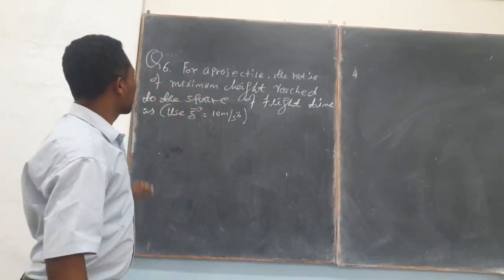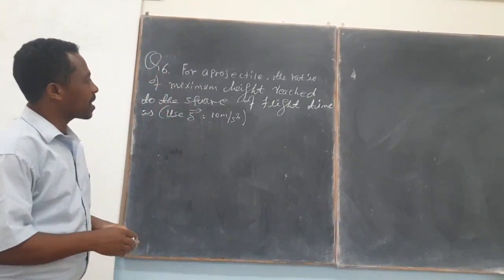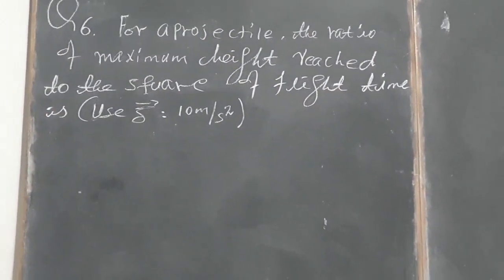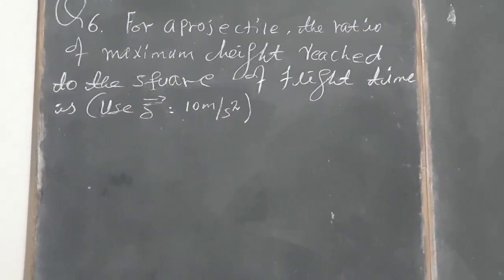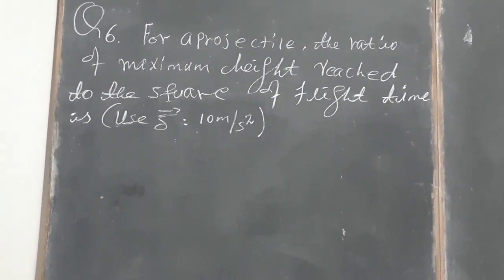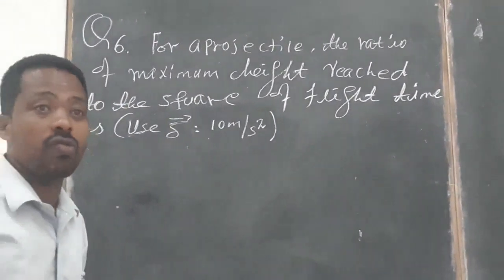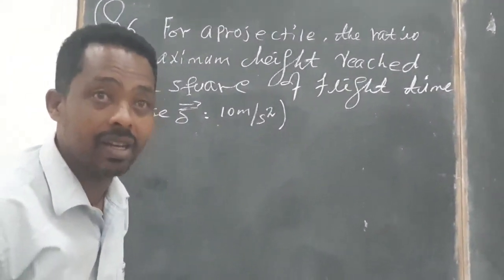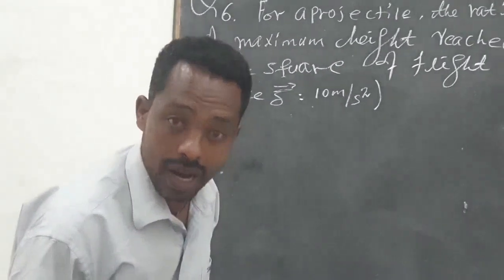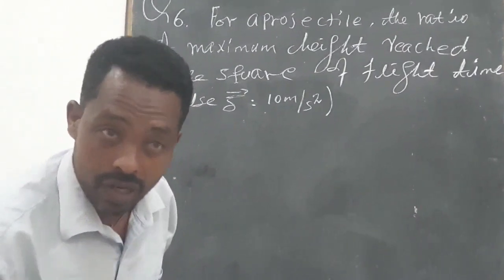Look here. For a projectile, the ratio of maximum height to the curve of flight time is required. We are requested to find the ratio of maximum height and the time of flight. To do that, we have to follow the following steps.